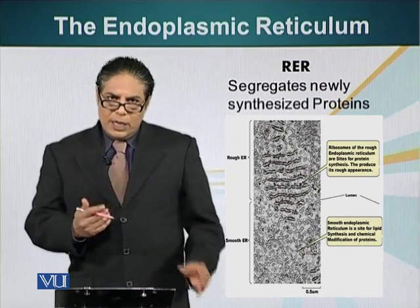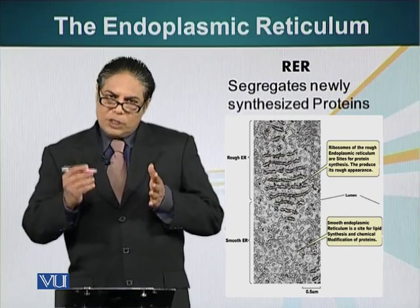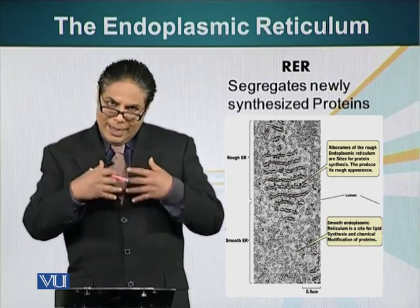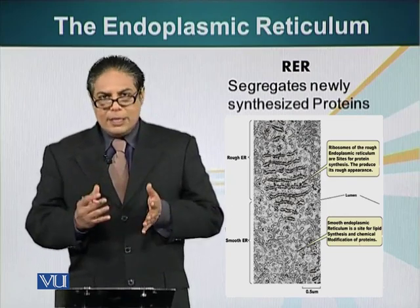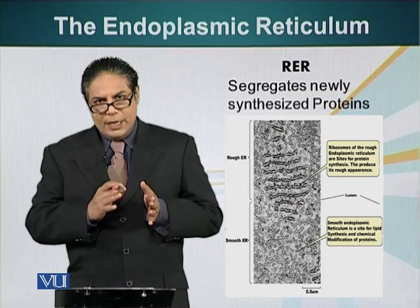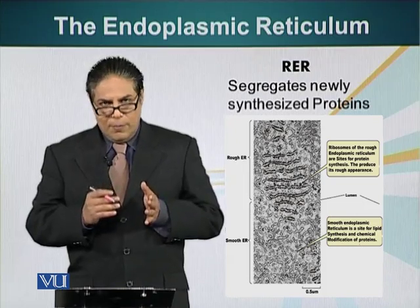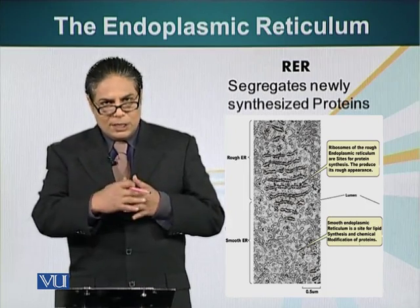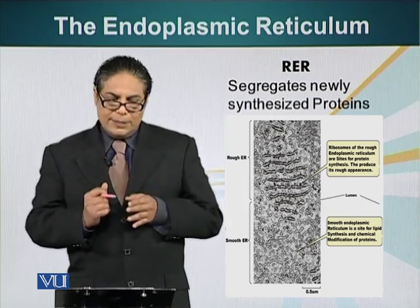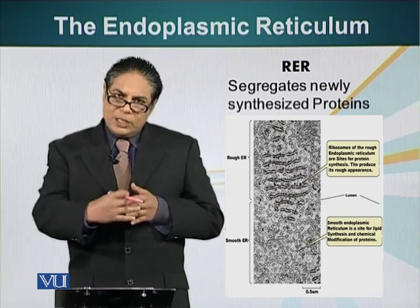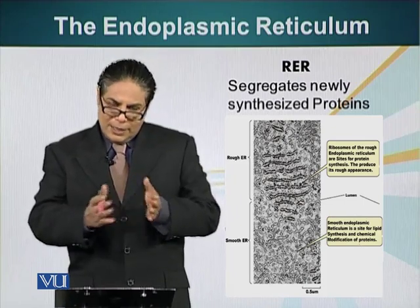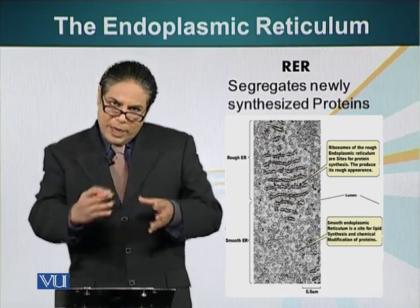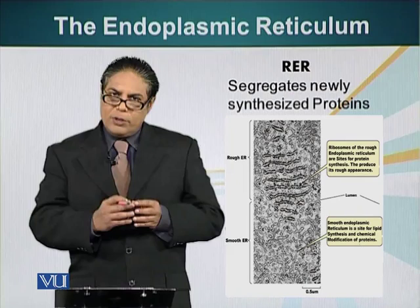As you saw in our animation, ribosomes which are making proteins that are supposed to go to the lysosome or have to be secreted — these ribosomes dock at a special place on the rough endoplasmic reticulum and they inject that protein directly into the space between those two membranes. The space between the two membranes is called the lumen, as endoplasmic reticulum is a double membrane structure.